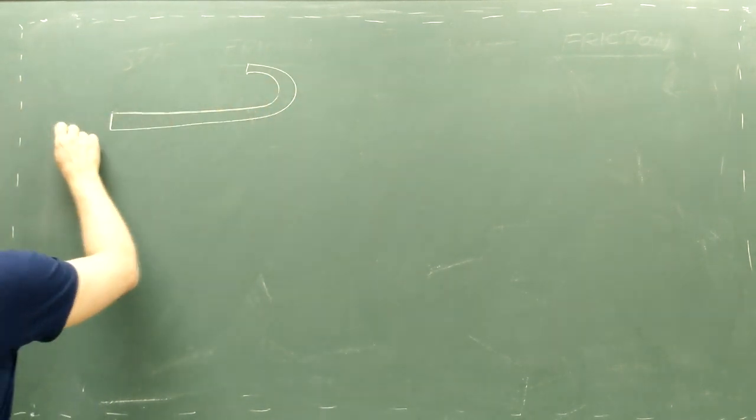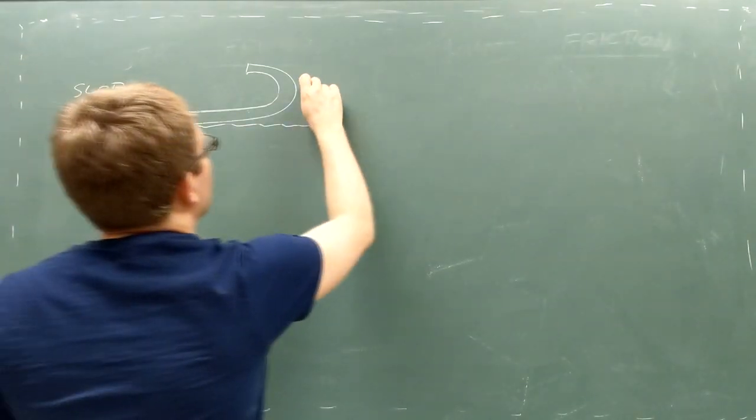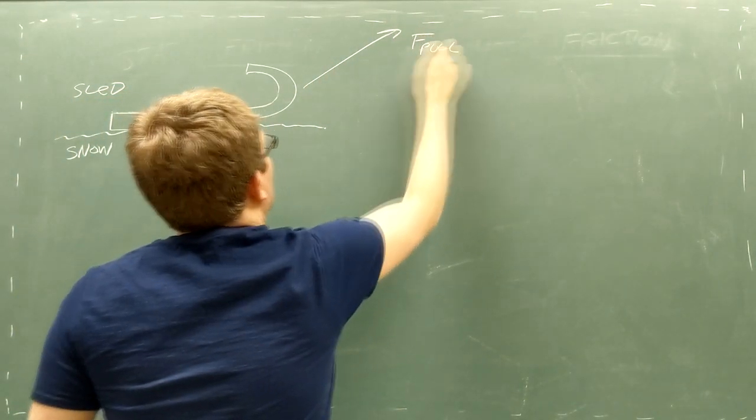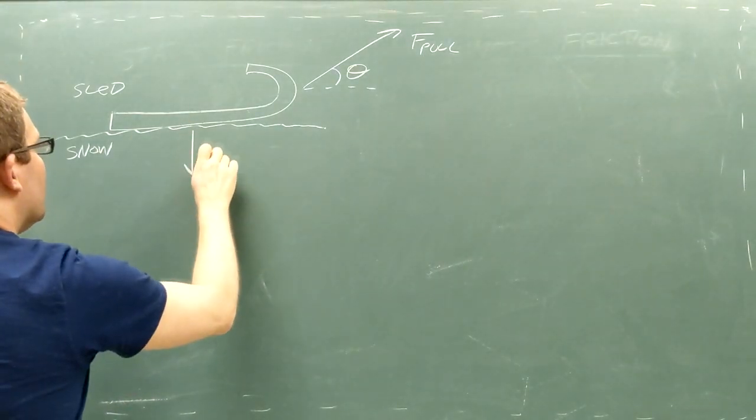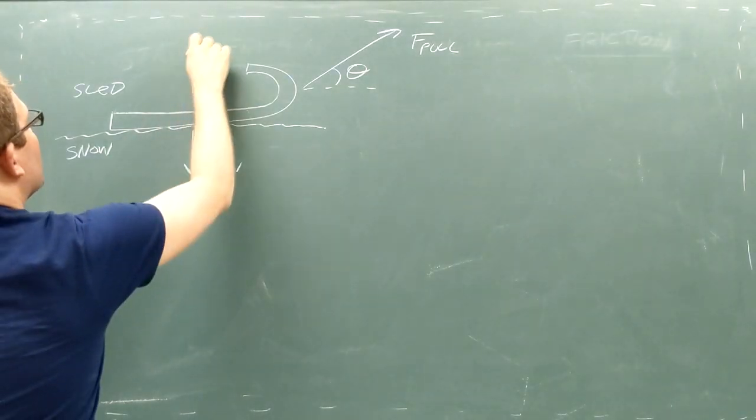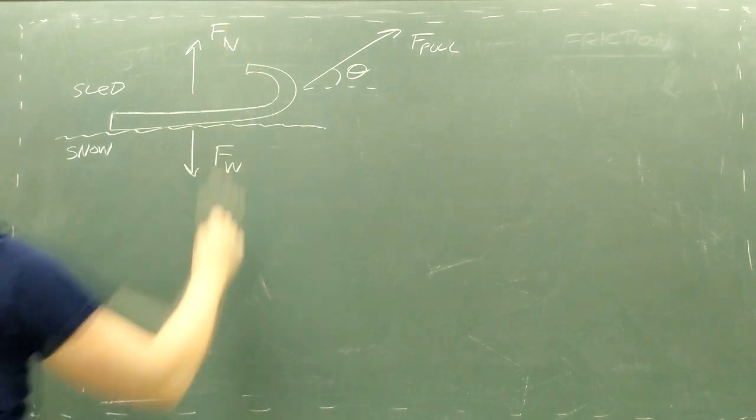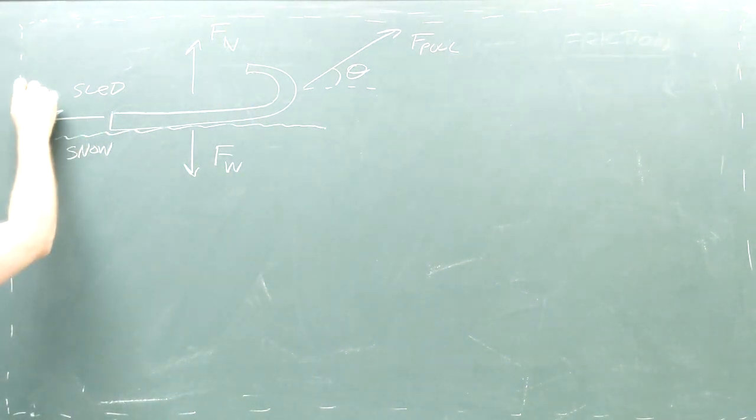Suppose you're pulling a sled across the snow. There are four forces acting on the sled. First is the force you pull with, usually directed at an angle upward along the rope you use to pull the sled. Second is the sled's weight pulling downward. Third is the normal force of the ground pushing upward on the sled. And finally there's the friction force pulling the sled backward.